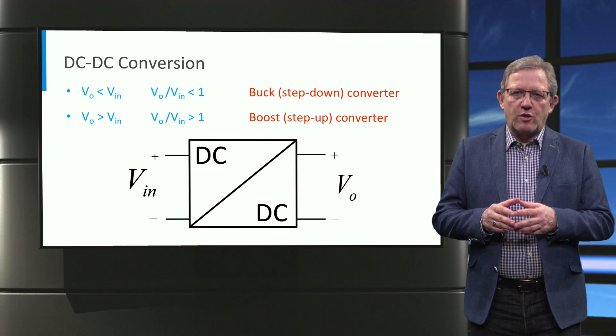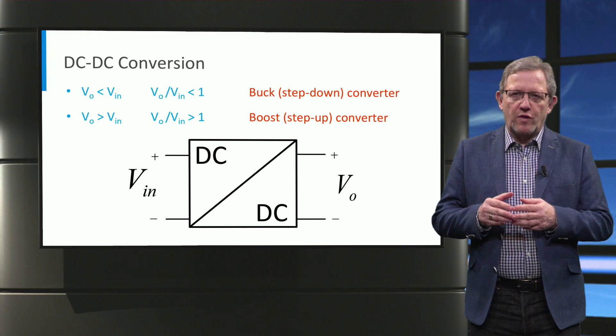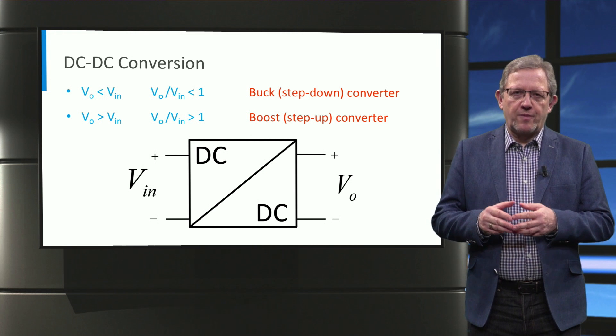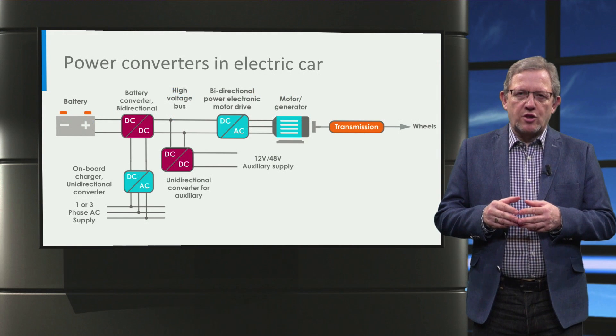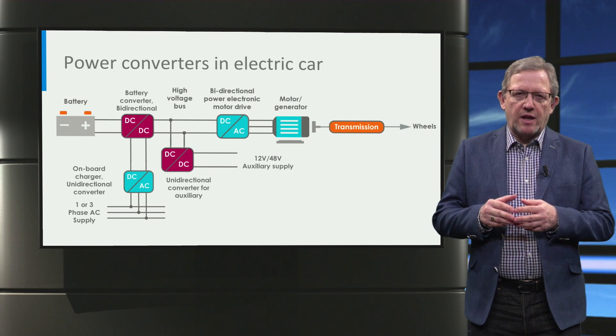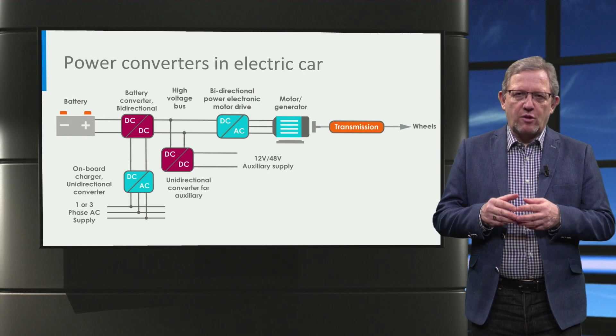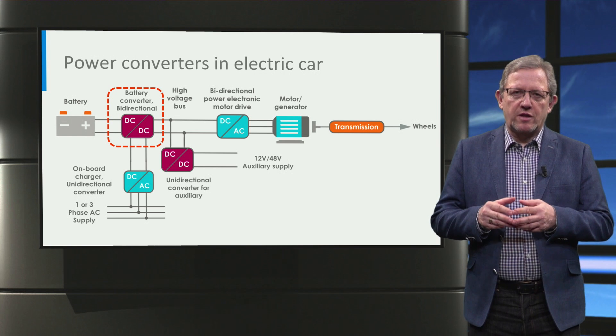In this lecture, we are going to have a look at one of the simplest forms of DC voltage conversion, that is a buck converter or step-down chopper. This figure shows a typical layout of a power electronic component in a battery electric vehicle. As you can see from the picture, the battery is connected to the high voltage bus via a bidirectional DC-to-DC converter.